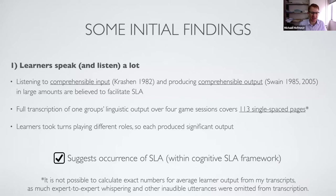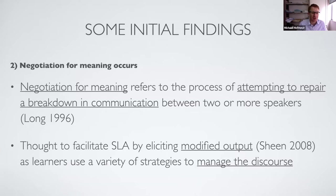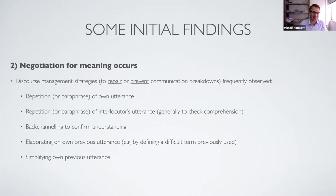Secondly, I looked at negotiation for meaning — the process of attempting to repair communication breakdowns between speakers. If there's a misunderstanding, negotiation involves speakers trying to say things in other ways, modifying their output, and using discourse management strategies to get the communication back on track to convey the original meaning. This is also believed in the interactionist model to facilitate second language acquisition.